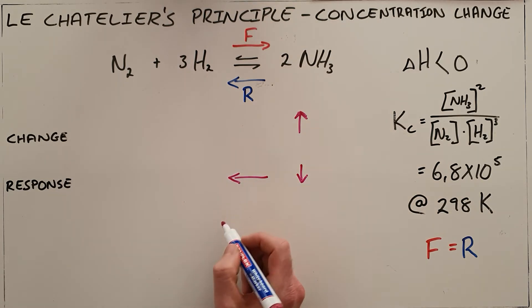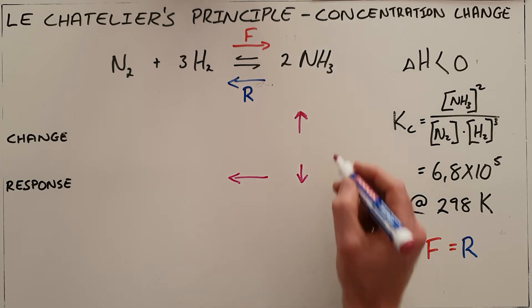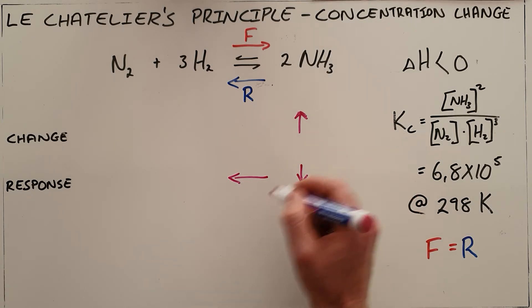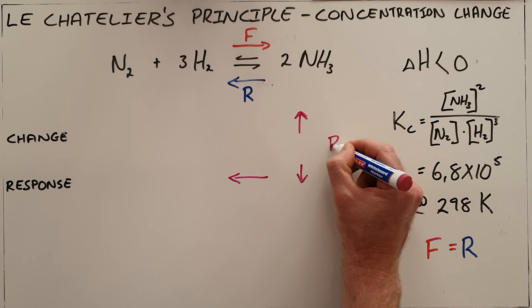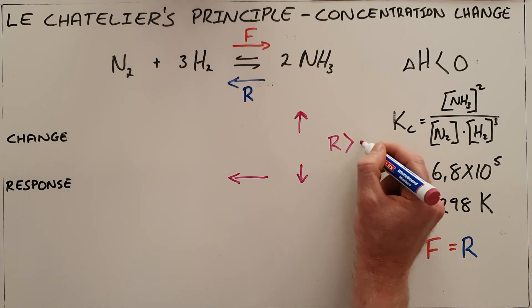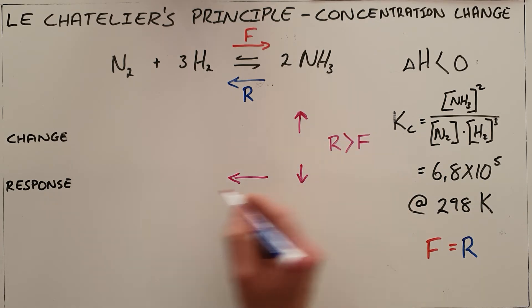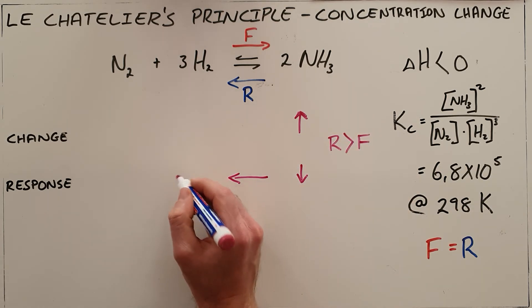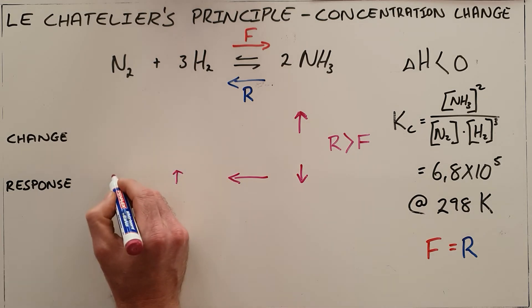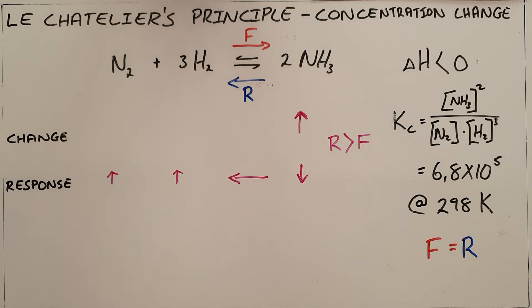When we say that we favor the reverse reaction, what we are saying is that for this brief period of time, the rate of the reverse reaction is greater than the rate of the forward reaction. By favoring the reverse reaction, we are decreasing the concentration of ammonia and increasing the concentration of hydrogen and nitrogen.